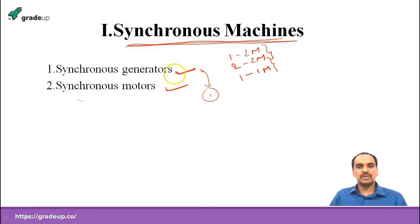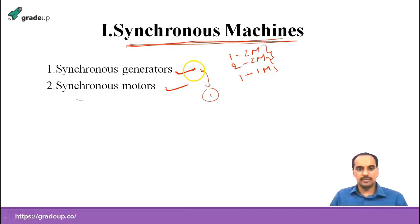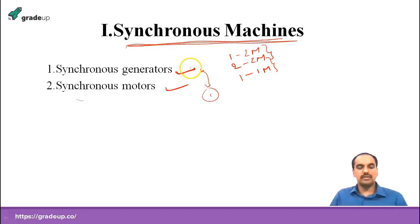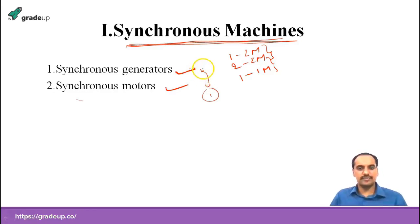After that, if you come across the salient pole synchronous generator — how to calculate it, what is the phasor diagram, which is very important — and also the calculation of power delivered by the synchronous generators, meaning synchronizing power, everything is important here. Then also the parallel connection of generators and their characteristics.